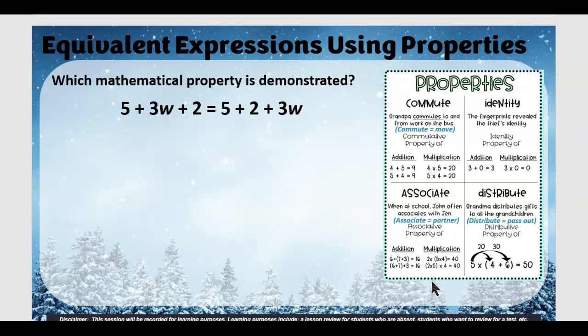Which property is being demonstrated here? Pause the video to figure it out. I see a five and a five, three w's here and three w's over there — something's being moved around, something's being changed. The terms are changing, not the groupings — they changed the order. That's called commutative property.